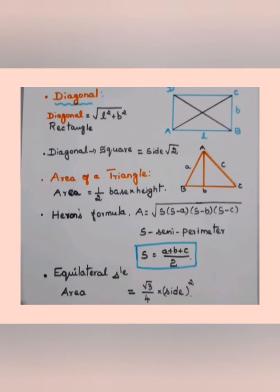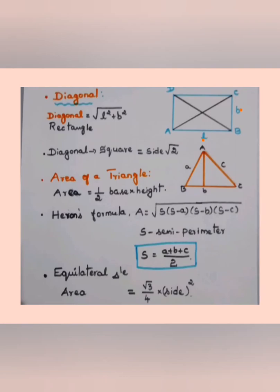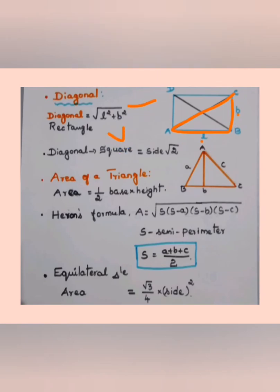If the diagonal of a plane figure needs to be calculated — for a rectangle ABCD with length l and breadth b — the diagonal AC (or BD) is calculated using: diagonal = √(l² + b²), that is, the square root of length squared plus breadth squared.